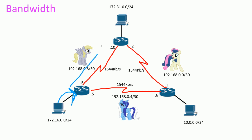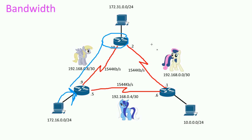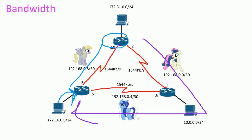The packet takes this path and gets to this router. But when this router sends a reply back, it knows the best path back is the other way — because we set the bandwidth label here to one kilobit, and 1544 is way better.